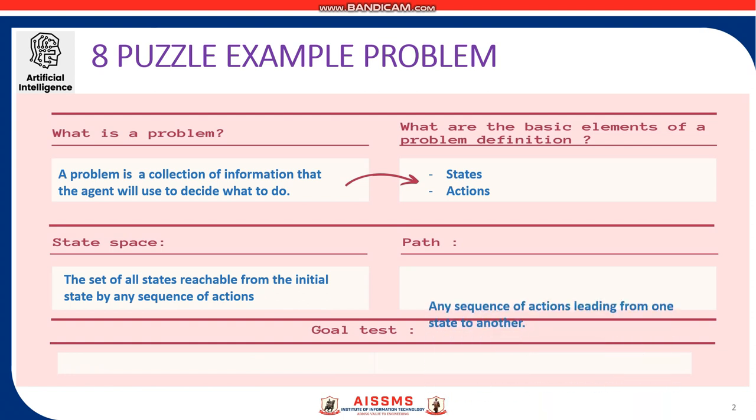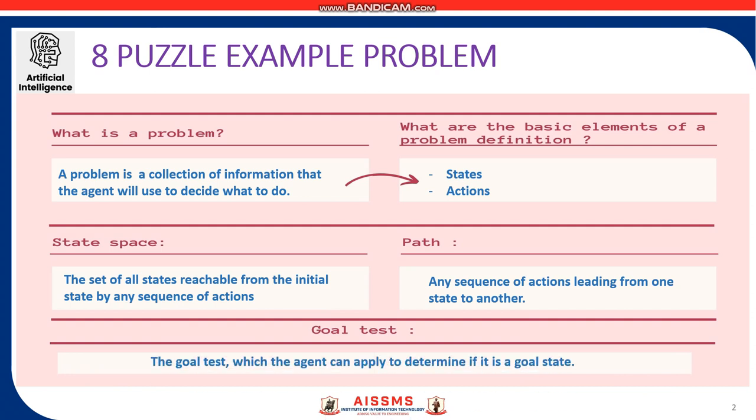A path in the state space is simply any sequence of actions leading from one state to another. The goal test which the agent can apply to determine if it is a goal state.